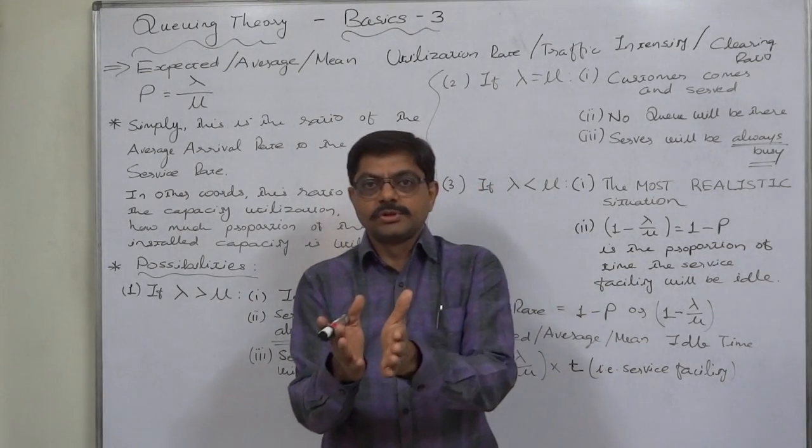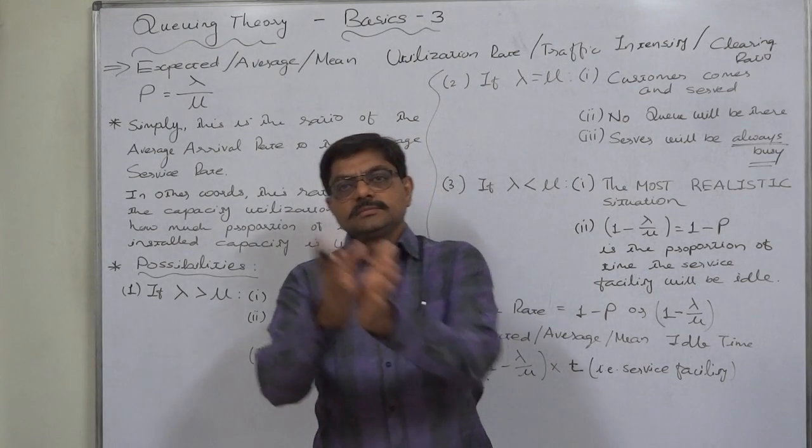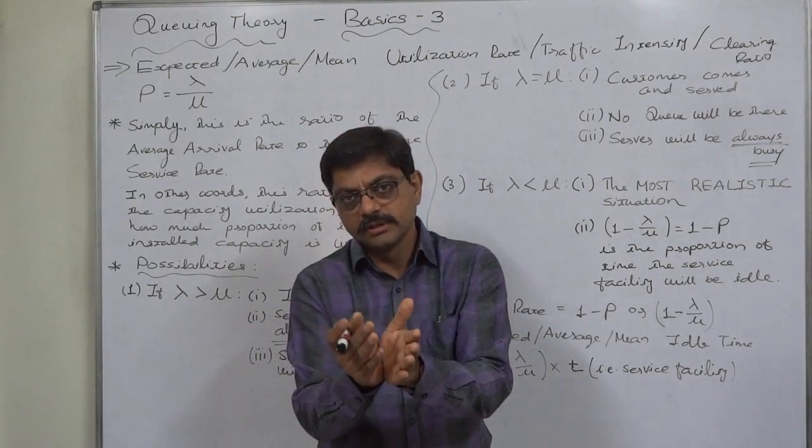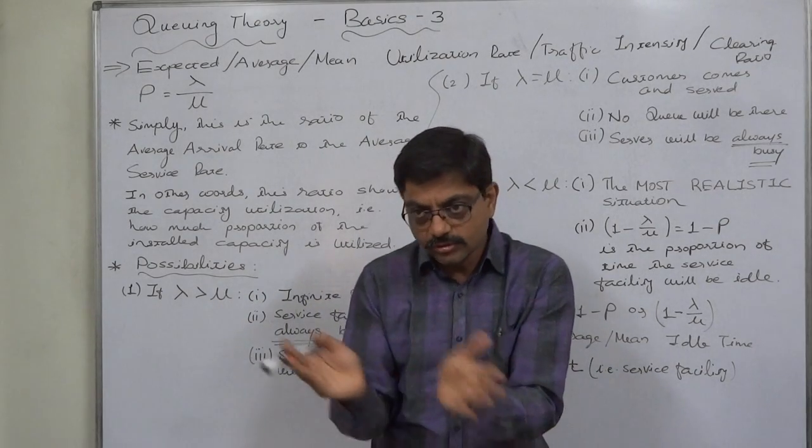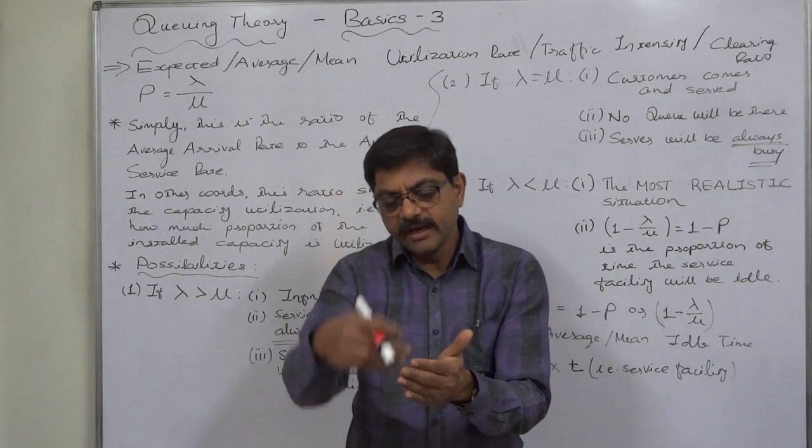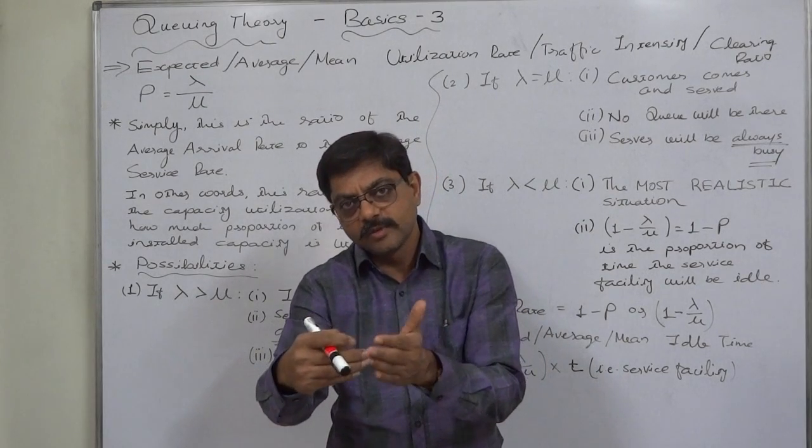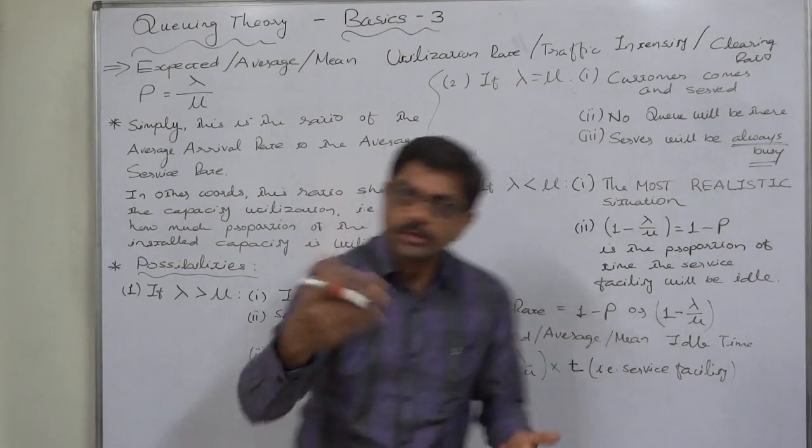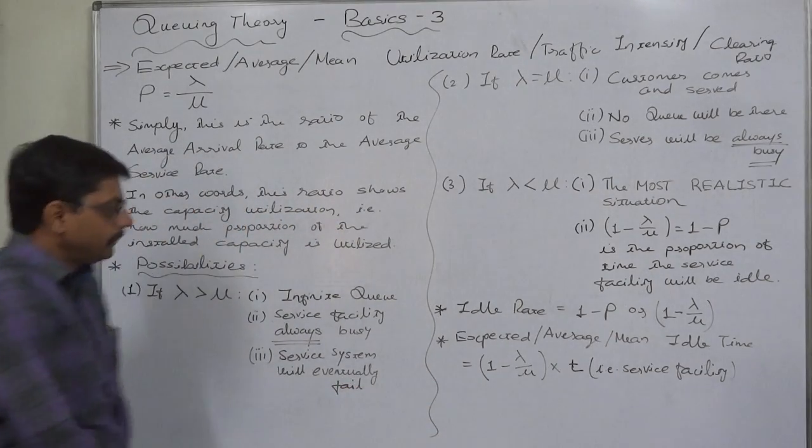One customer comes every four minutes. Cashier takes four minutes to serve one customer. So as and when he completes serving the customer in front of him, another customer arrives and so on. So he will always be busy.